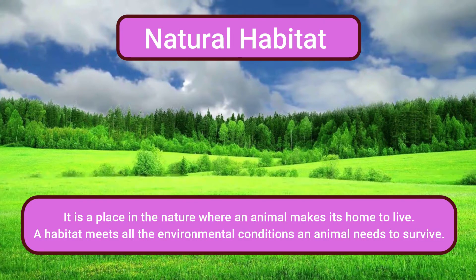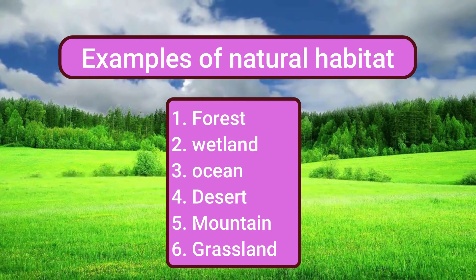Natural habitat: it is a place in nature where an animal makes its home to live. A habitat meets all the environmental conditions an animal needs to survive. Different types of natural habitats are forest, wetland, ocean, desert, mountain, and grassland.